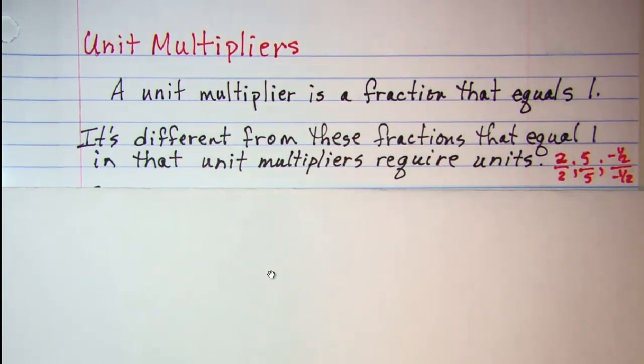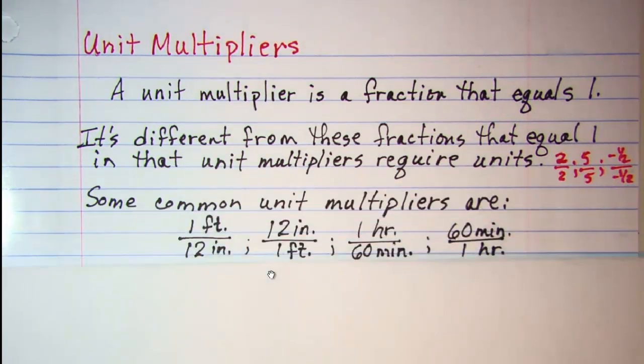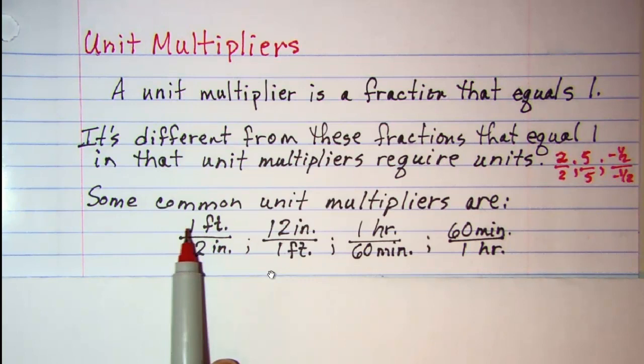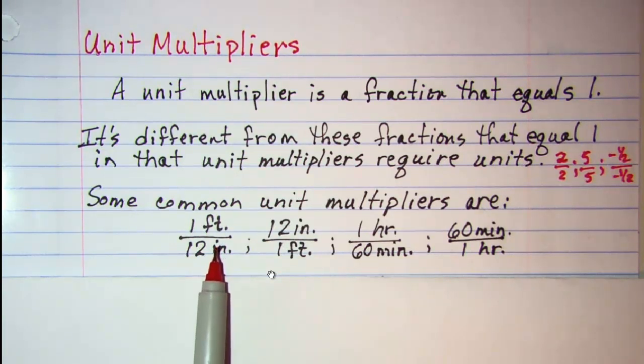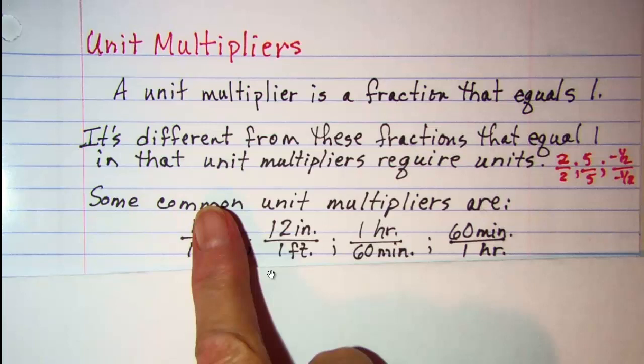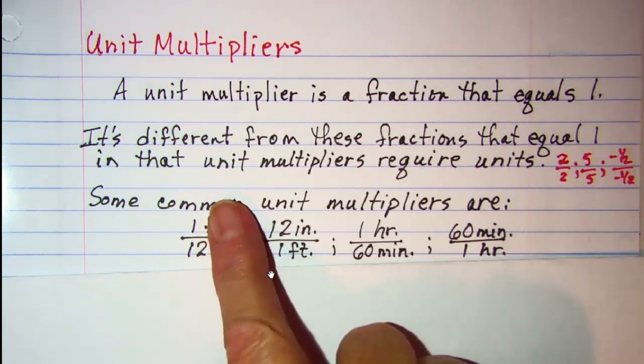Now unit multipliers also equal one, but some common unit multipliers would be one foot over 12 inches. Again we have the same value - one foot and 12 inches are equivalent measures and so they're equal values in the numerator and denominator.